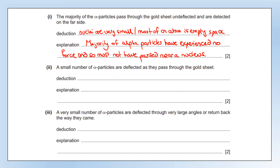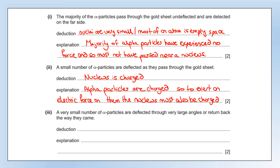A small number of alpha particles are deflected as they pass through the gold sheet. Deduction: the nucleus must be charged. Explanation: alpha particles are charged, so to exert an electric force on them the nucleus must also be charged — both objects have to be charged to exert an electric force on each other.